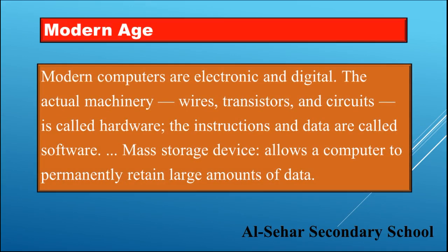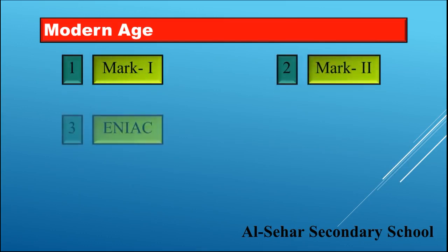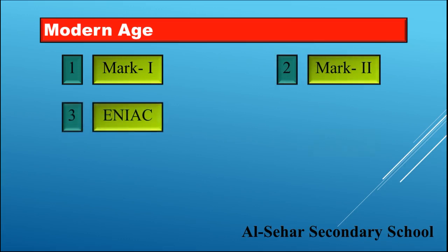Modern computers are electronic and digital. The actual machinery, wires, transistors, and circuits is called hardware. The instructions and data are called software. A mass storage device allows a computer to permanently retain large amounts of data.